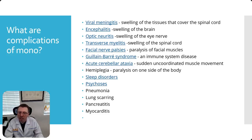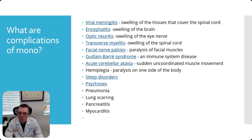Facial nerve palsies — that means some of the cranial nerves including the facial nerve can be involved and you can have paralysis of facial muscles. Guillain-Barré syndrome is an immune system disease that causes ascending paralysis, and it's been talked about quite a bit since vaccinations and with COVID. Acute cerebellar ataxia — your cerebellum is responsible for coordination and muscle movement. Hemiplegia, paralysis of one side of the body. Sleep disorders, psychosis, pneumonia including lung scarring, pancreatitis which is inflammation of the pancreas, and myocarditis, inflammation of the heart.